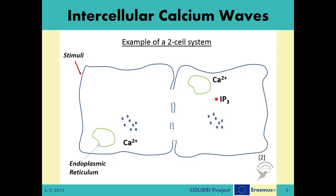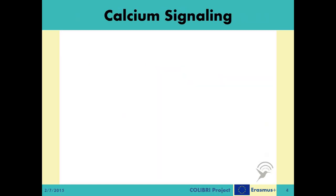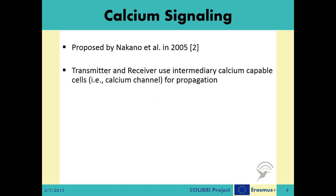In a system with more than two cells, this signal relaying continues for a certain number of cell hops based on various values like the strength of the initial stimuli. Inspired by this ion-based diffusion system called ICW, Nakano et al. have proposed a molecular communication system called the calcium signaling in their 2005 paper. The system is composed of the transmitter, the intermediary calcium channel, and the receiver.